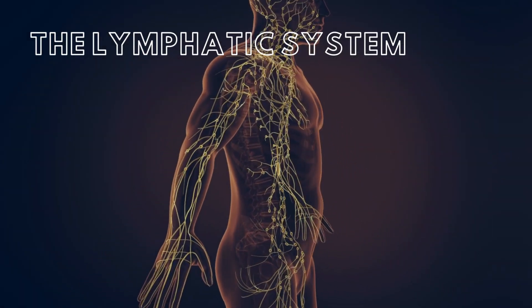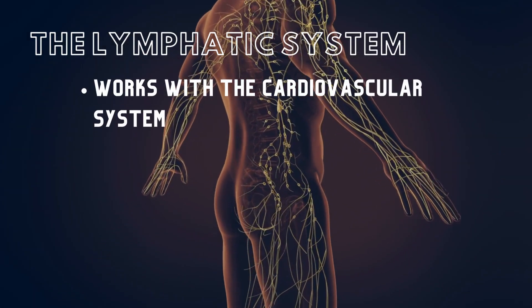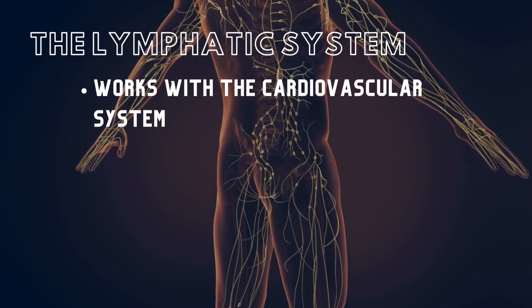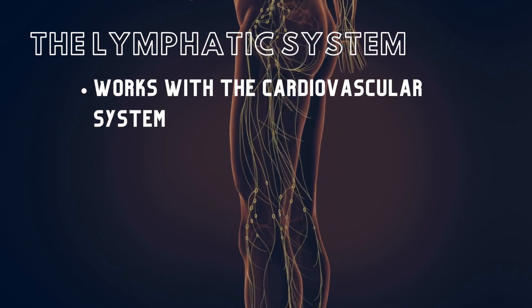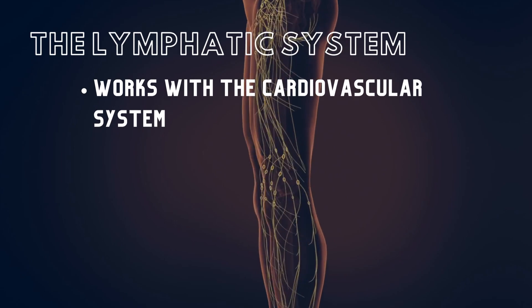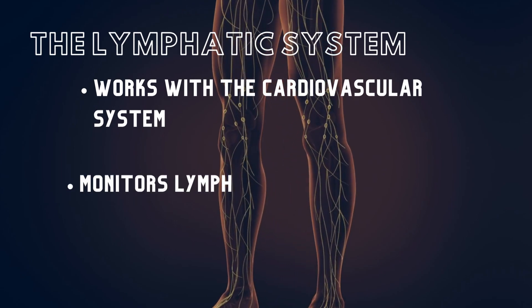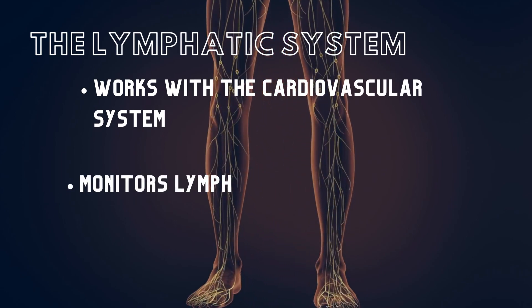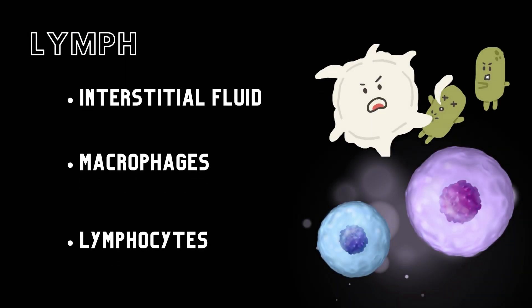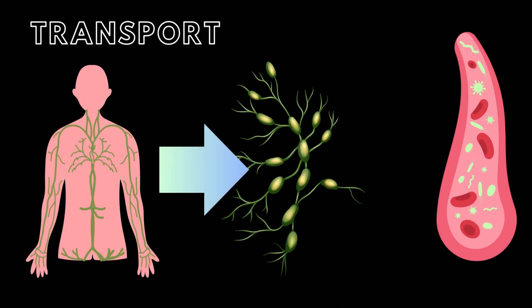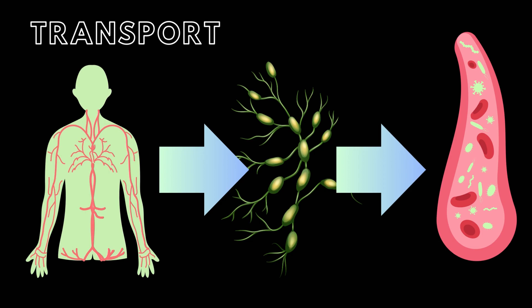The lymphatic system is closely associated with the cardiovascular system and plays an important role in supporting it. The lymphatic system transports and monitors a specialized fluid called lymph. Lymph consists of interstitial fluid, macrophages, and lymphocytes. Lymphatic vessels carry lymph from the periphery of the body to the lymphatic system and then to the cardiovascular system.